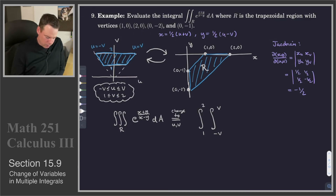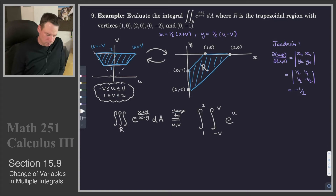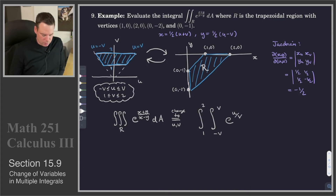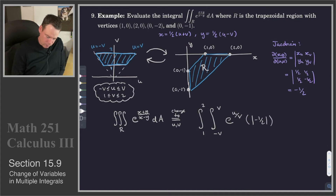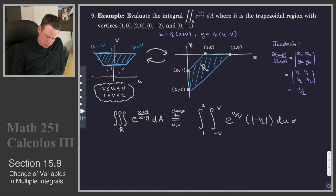Then we've got our integrand, e to the x plus y. If I take x and add it to y, I get the value u. If I take x and subtract y, that's one half u minus one half u equals zero, and then one half v minus negative one half v becomes just v. So the integrand becomes e to the u over v. Then we update dA, which becomes the absolute value of the Jacobian times dU dV.